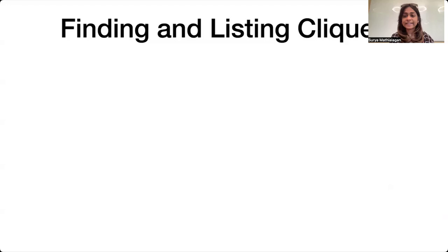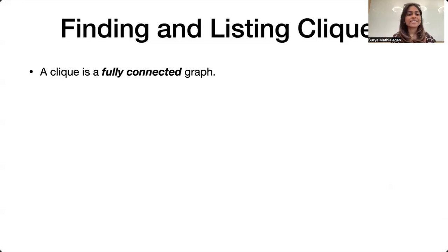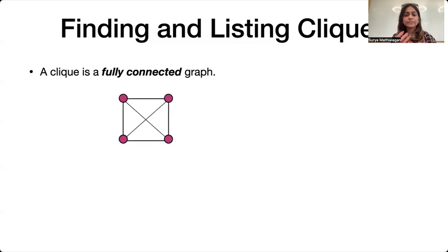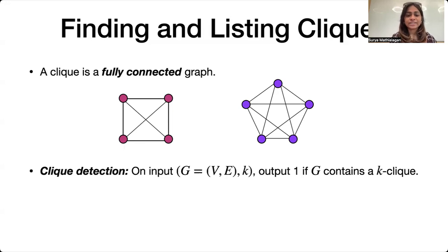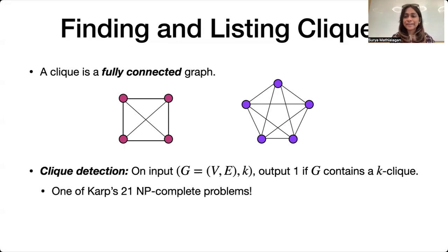So what's the problem of finding and listing a clique? First, I'll define what a clique is. A clique is a fully connected graph. For example, this is a clique on four nodes and this is a clique on five nodes, so every pair of nodes are connected. Clique detection is the problem where you're given a graph G and a parameter K, and you have to output one if the graph G contains a fully connected K-clique and zero otherwise. This is a very fundamental problem in computer science — it was in fact one of Karp's original 21 NP-complete problems.